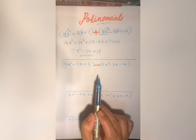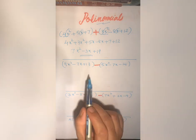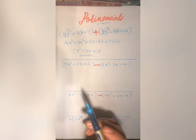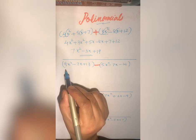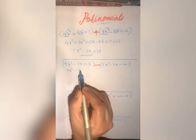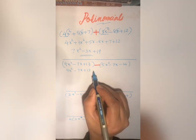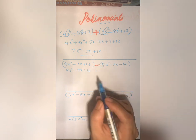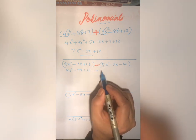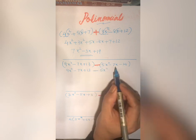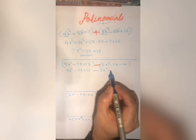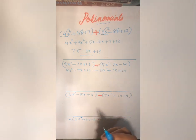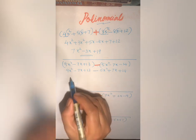The second one is subtraction. Before subtracting we need to distribute the negative sign to all the terms inside the bracket. First I will just remove the bracket of the first polynomial. Then we multiply all the terms with the negative sign.